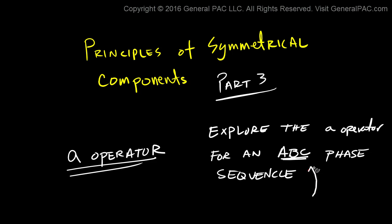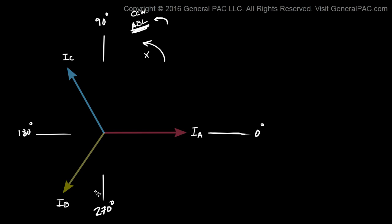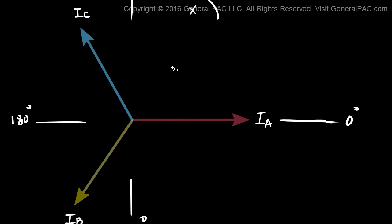It's really important to note that we're going to be working with an ABC phase sequence. Let's say we have a balanced system with an ABC phase sequence. We'll call this horizontal line our reference line, which is at 0 degrees. This vertical line here is at 90 degrees with respect to the reference line, this line is at 180 degrees, and this one is at 270 degrees. If we evaluate IA, we know that IA equals some magnitude I, and it's in line with the reference line.